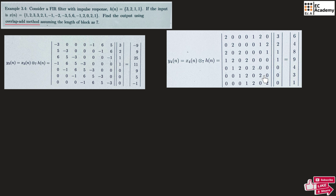Finally we can find y4 of n by writing the matrix x4 of n in circular form and multiplying with h of n to get the values 6, 4, 8, 9, 4, 3, and 1.